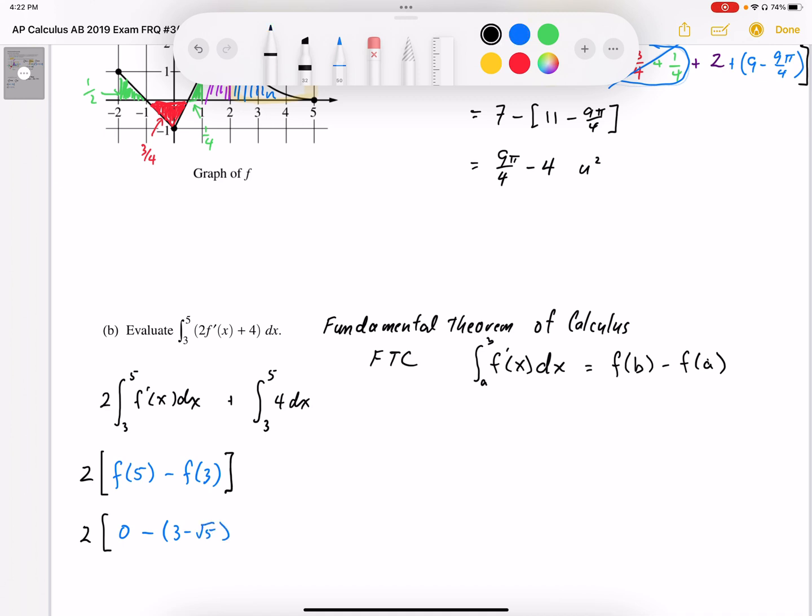To that, we add the integral of 4dx, which anti-differentiates to 4x, evaluated from 3 to 5. Working that out, this gives 20 minus 12, which is the displacement on that graph.